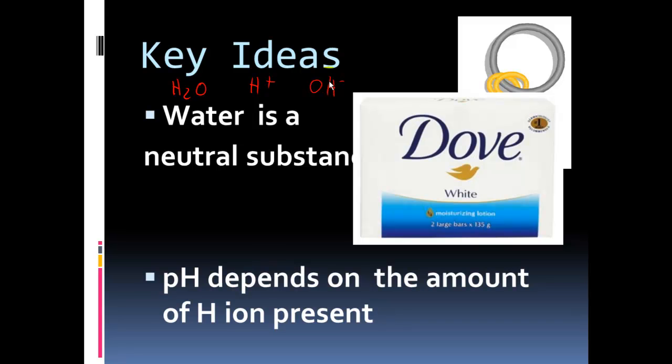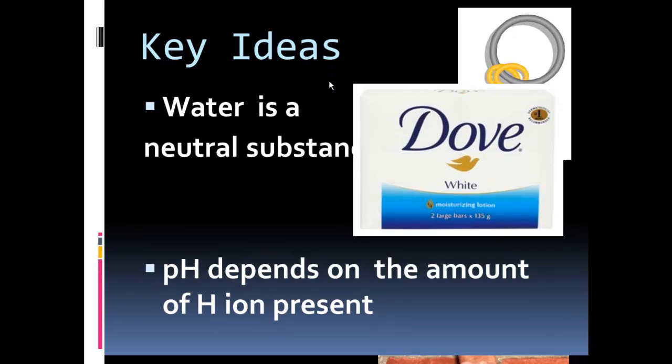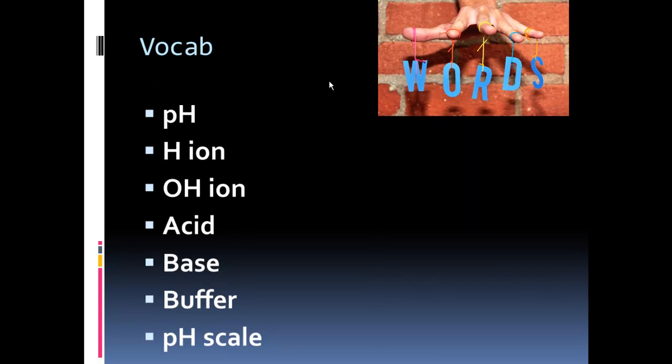pH is going to be a scale and it's going to be an indicator of how much hydrogen ion is free or available or is in any given system. So let's start with some vocabulary words. pH. And again, we're in the chemistry zone here. So people that are not strong chemistry students lacking it in your background, you're going to have to work a little harder.